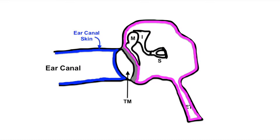This is a more anatomical drawing of the layers, with an outer squamous layer again in blue, the middle fibrous layer in gray, and an inner mucosal layer in pink. The ossicular chain and eustachian tube are shown for reference.